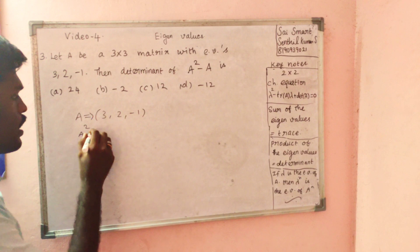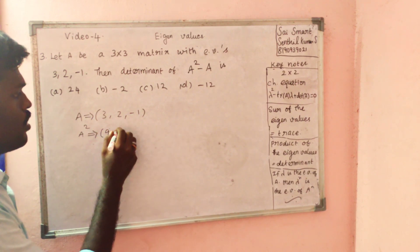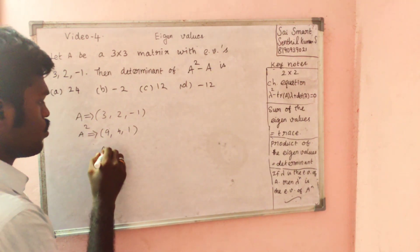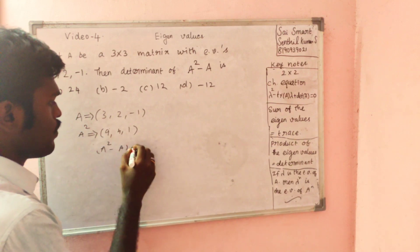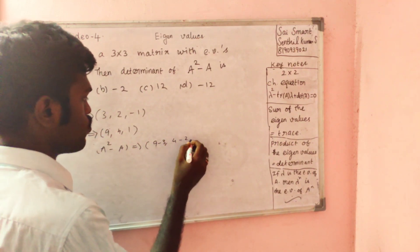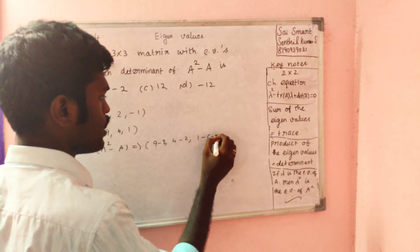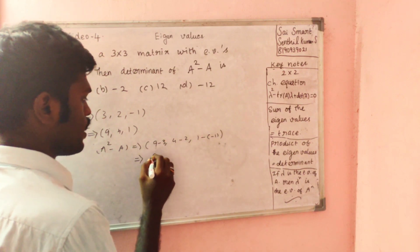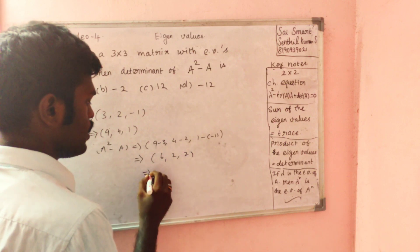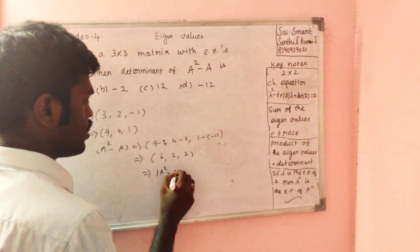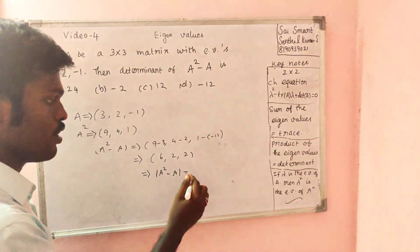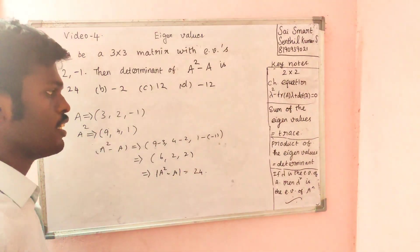Then A squared: 9, 4, 1, 1. So A squared minus A — eigenvalues: 9-3, 4-2, 1-1, which implies 6, 2, 0. So the answer would be A squared minus A. So A squared minus A is that result.